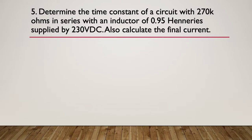Question 5: determine the time constant of a circuit with 270 kilohms in series with an inductor of 0.95 henries, supplied by 230 volts DC. Also calculate the final current. So pause here.